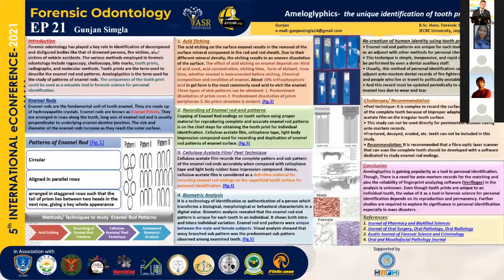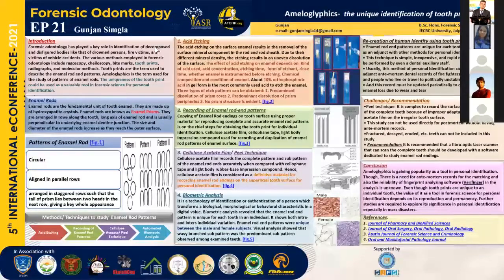We can use cellophane tape and cellulose acetate film for recording of enamel rod patterns. Cellophane tape is used for recording and duplication of enamel rod patterns of the enamel surface. As we can see in the diagram, it represents a schematic presentation of enamel rod recording using cellophane tape and cellulose acetate film.